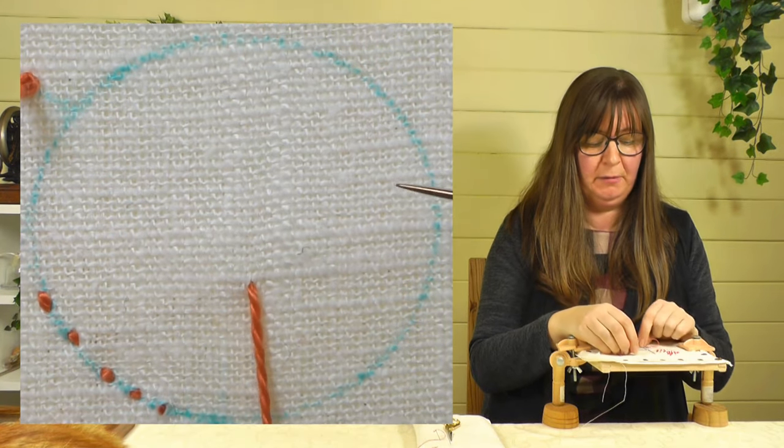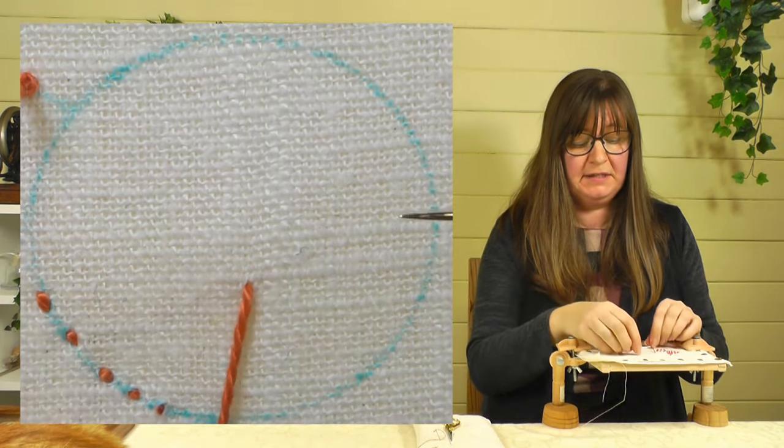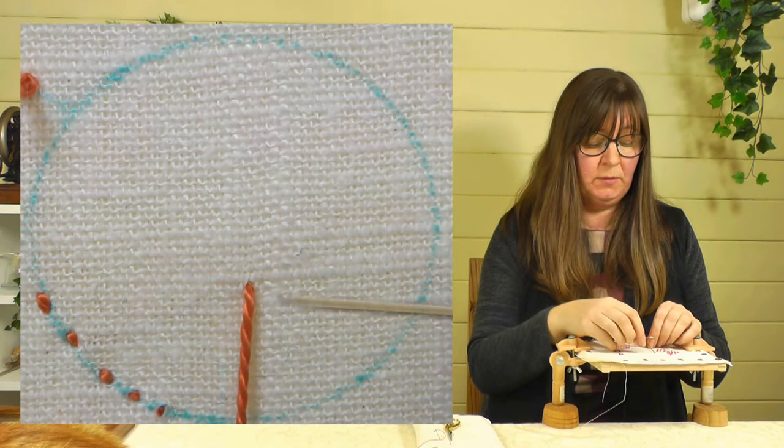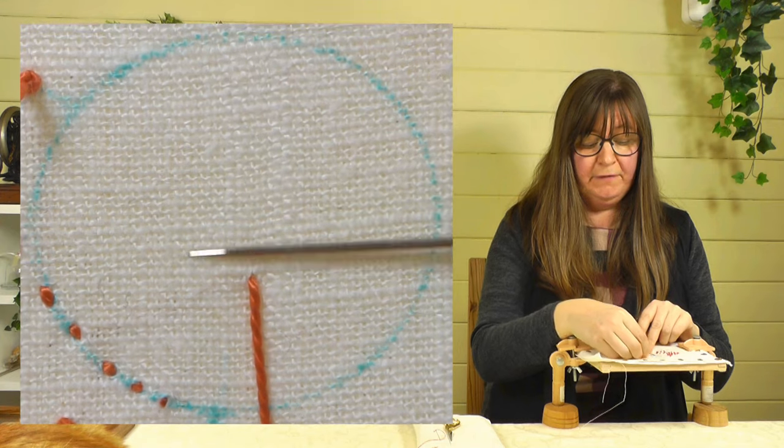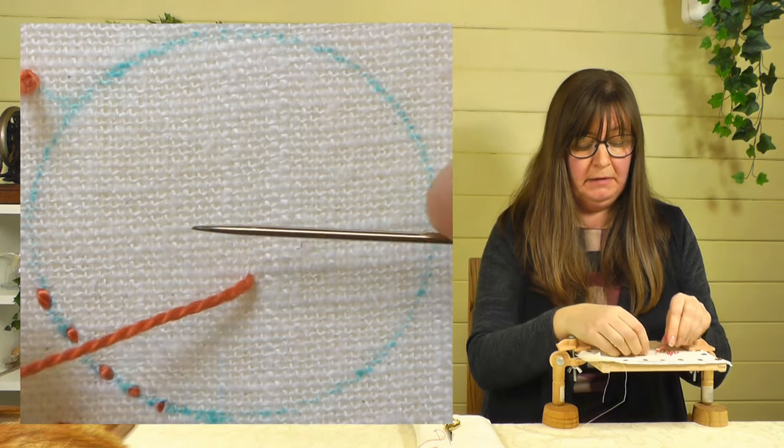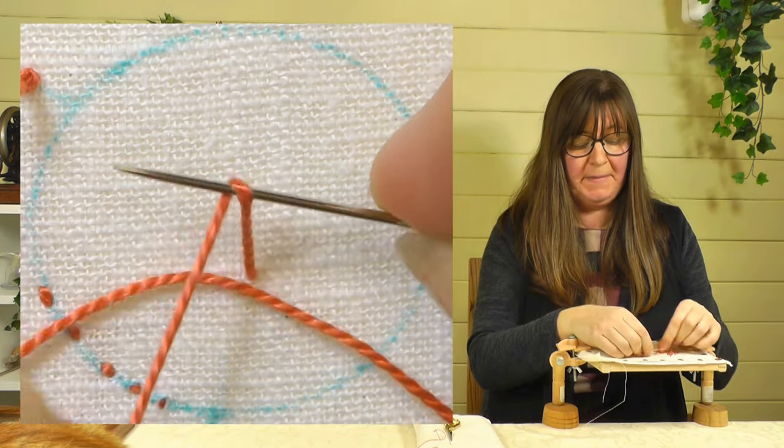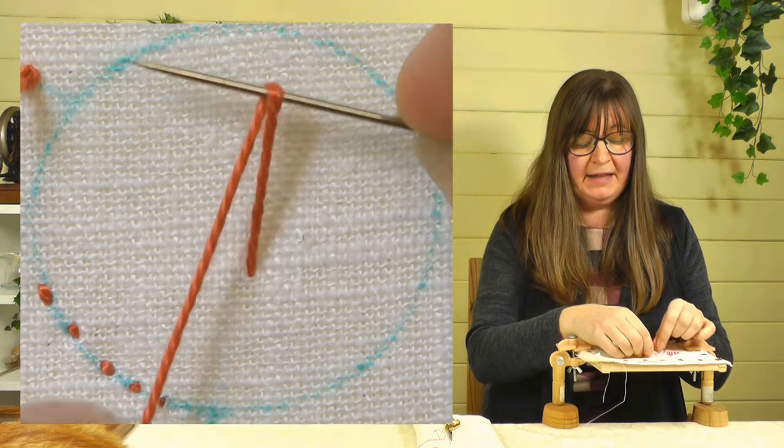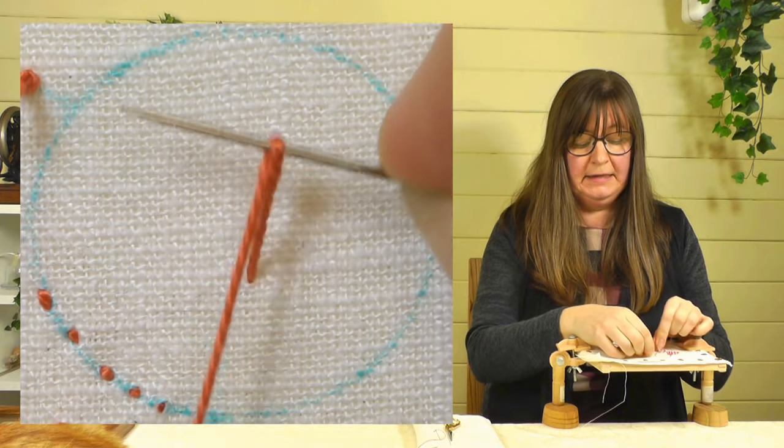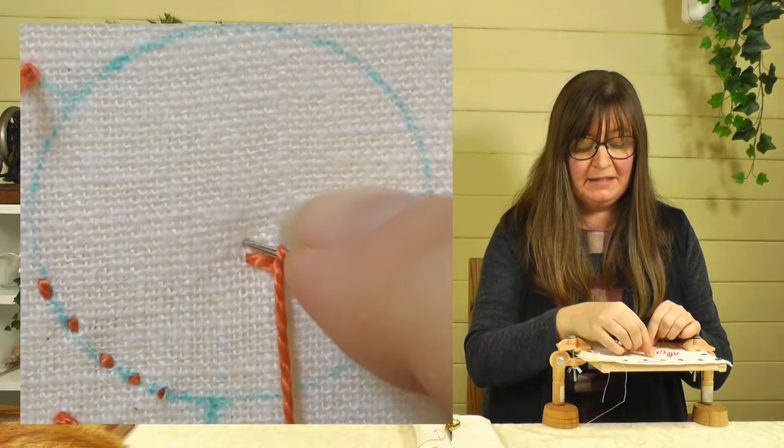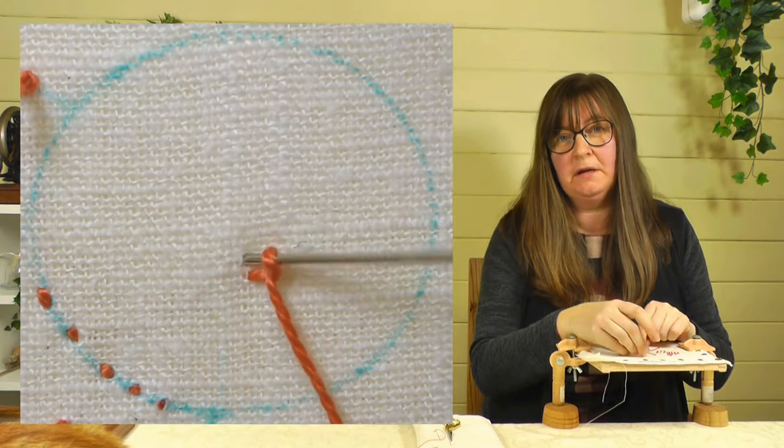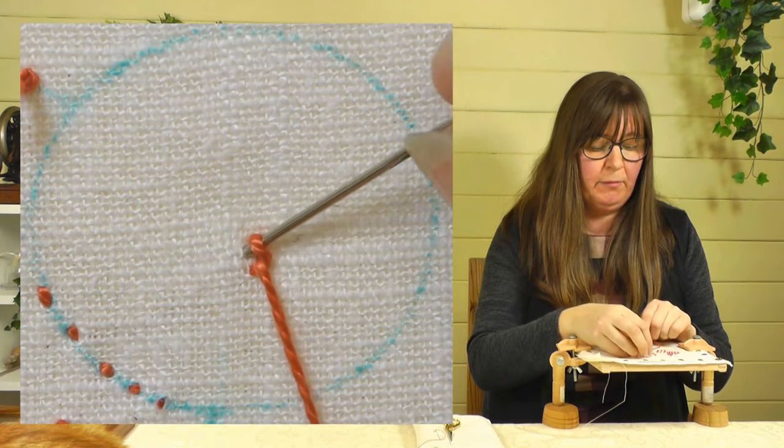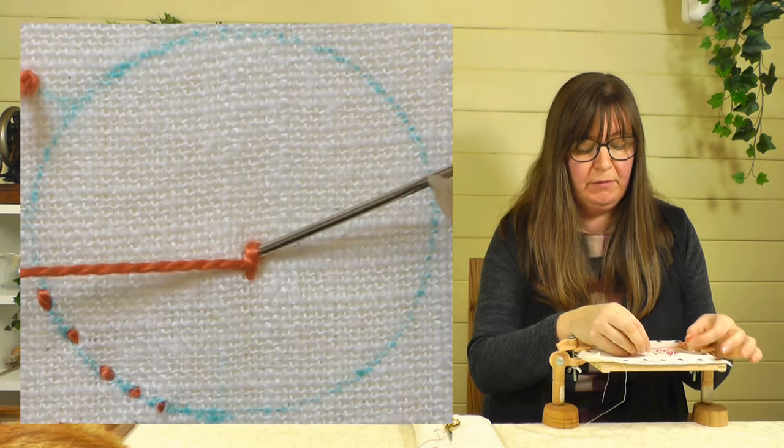So I'm going to bring my thread up where I want my knot to start, and this is if you're right-handed. I'll do left-handed as well in a moment. Thread comes towards me, needle is above the thread away from me, thread goes over the needle back towards me, and you need to keep that tension on that needle. Needle goes back into the fabric—not in the same hole that you came out, but very close by. That stops the knot pulling through to the back of the fabric, so that's important.